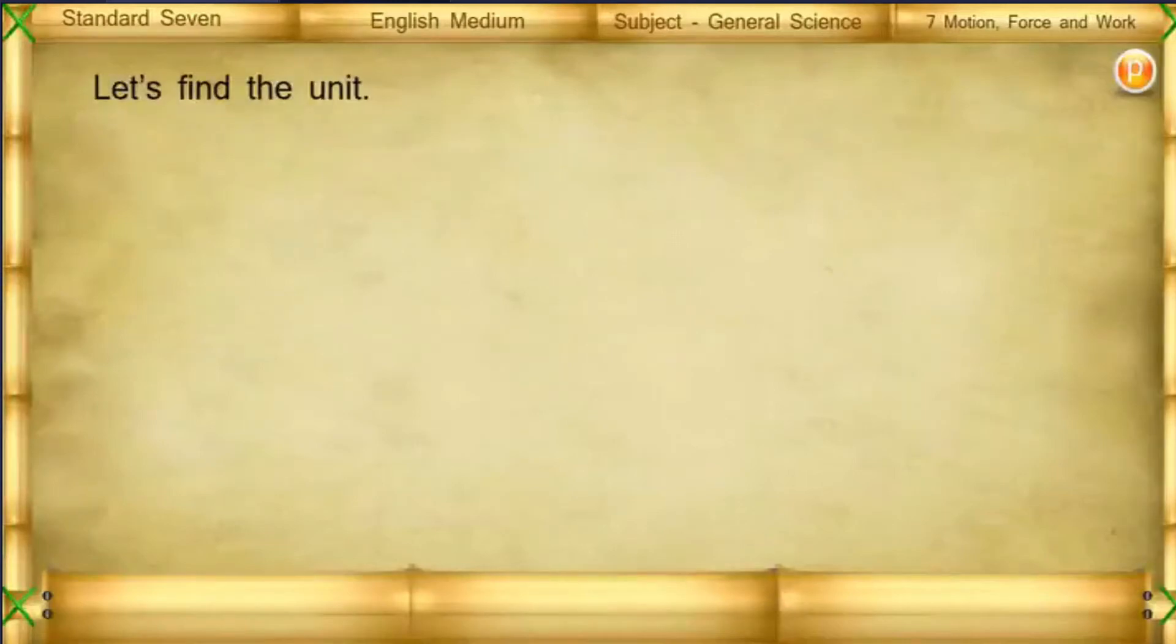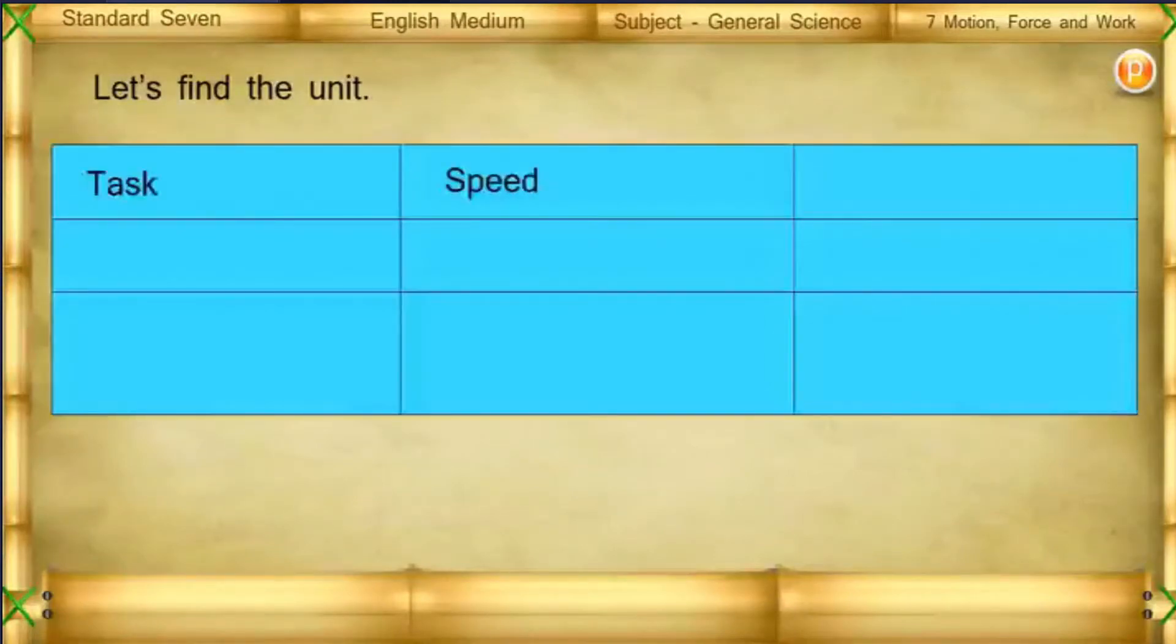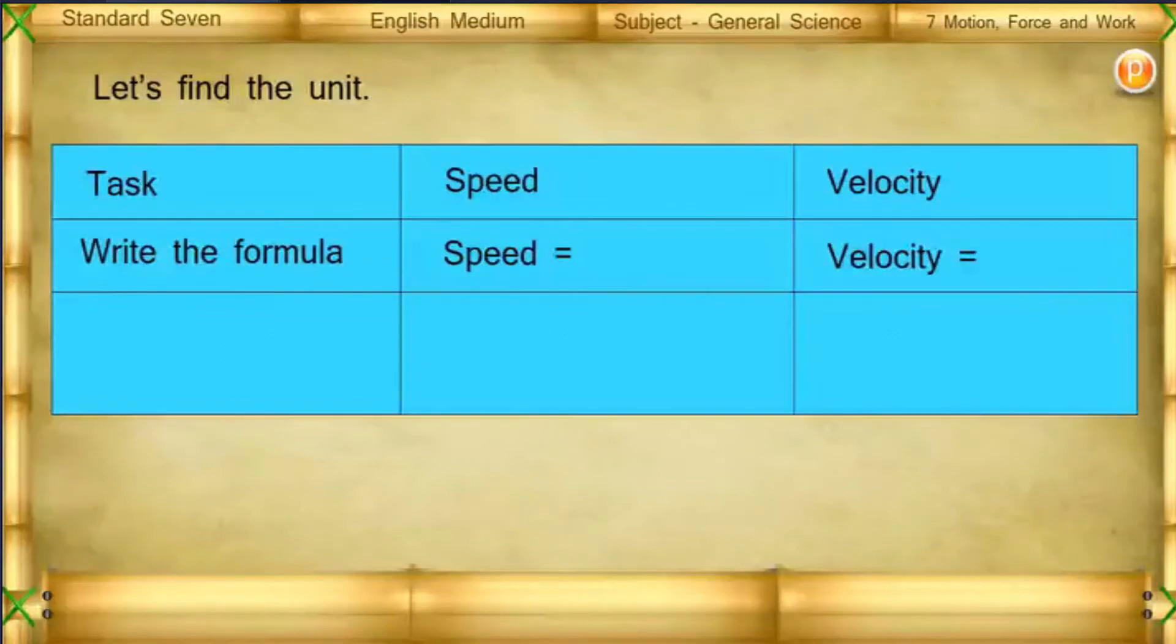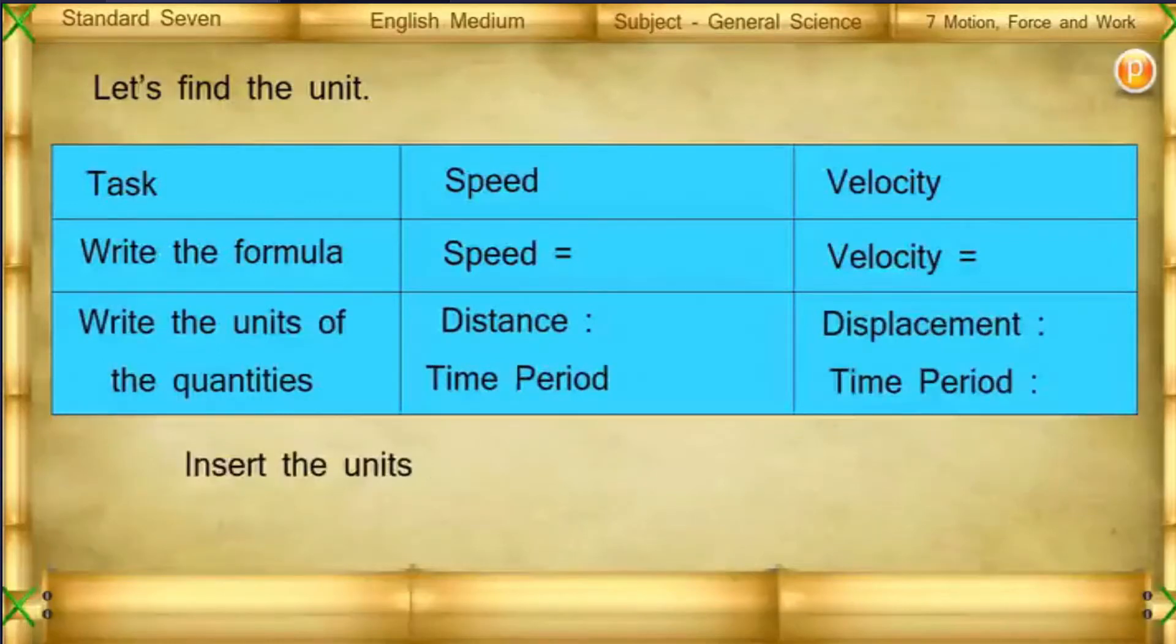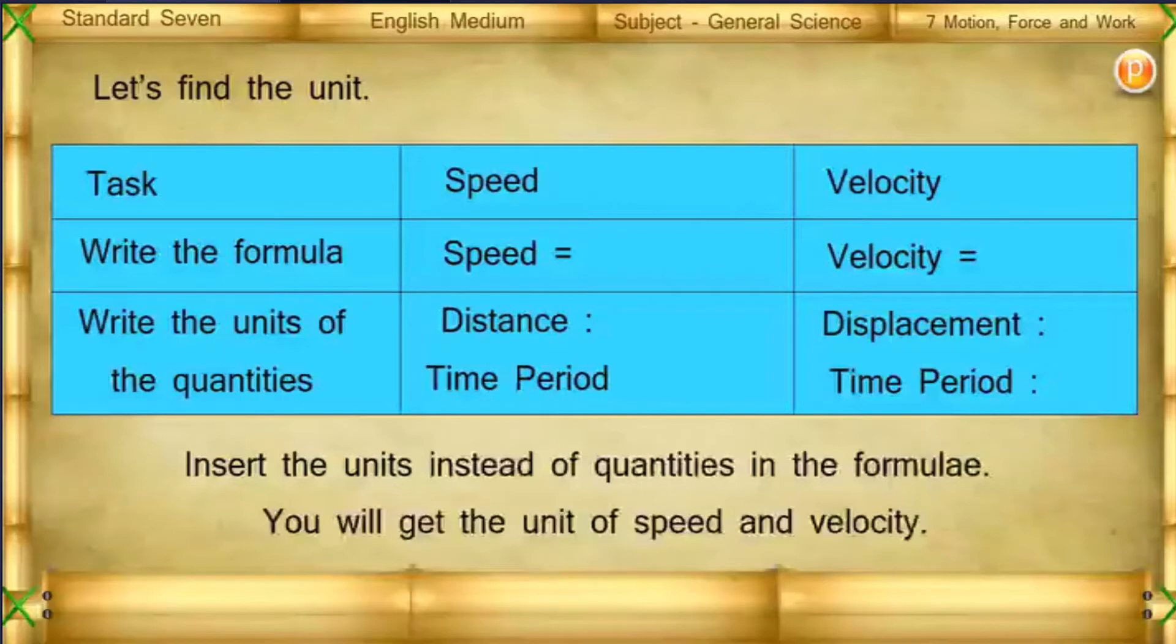Let's find the unit. Task: Speed and Velocity. Write the formula: Speed equals Distance over Time period. Velocity equals Displacement over Time period. Write the units of the quantities. Insert the units instead of quantities in the formula. You will get the unit of speed and velocity.